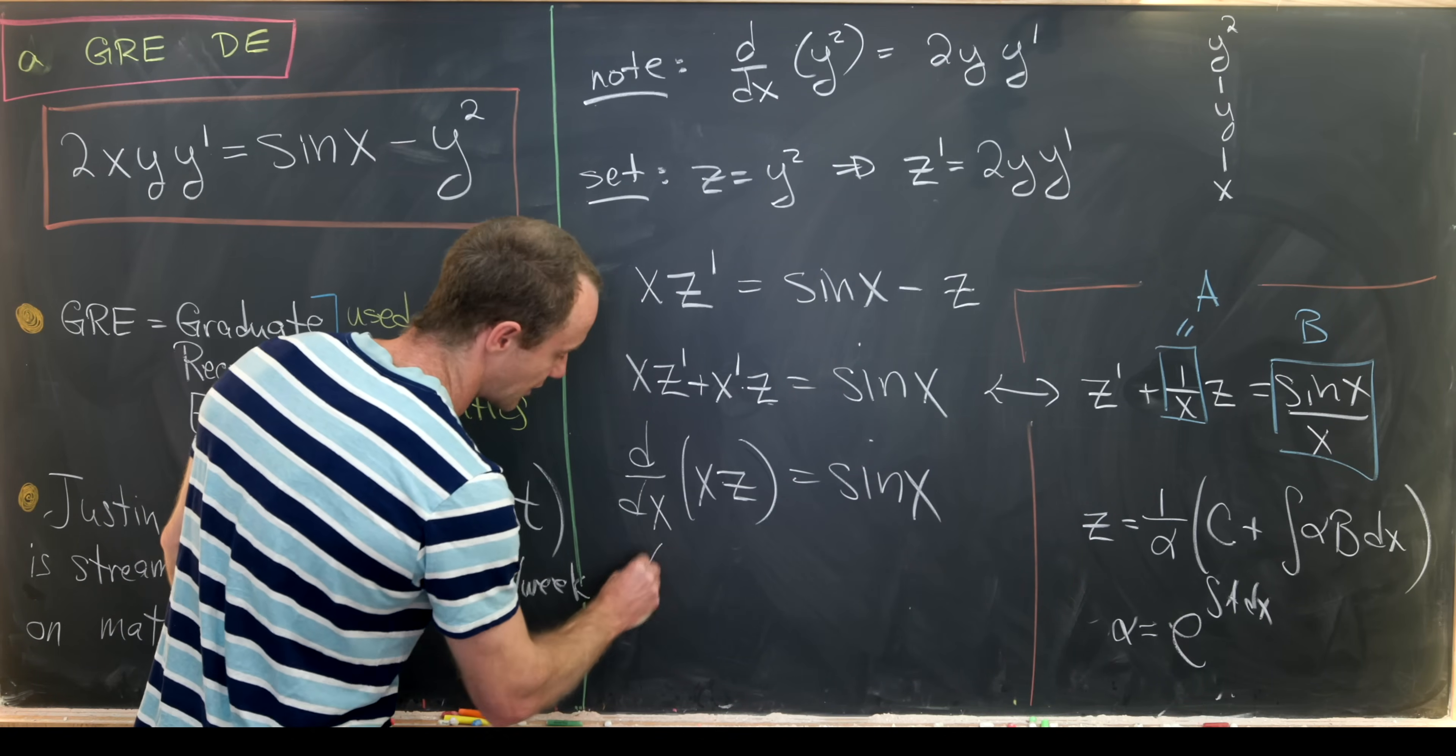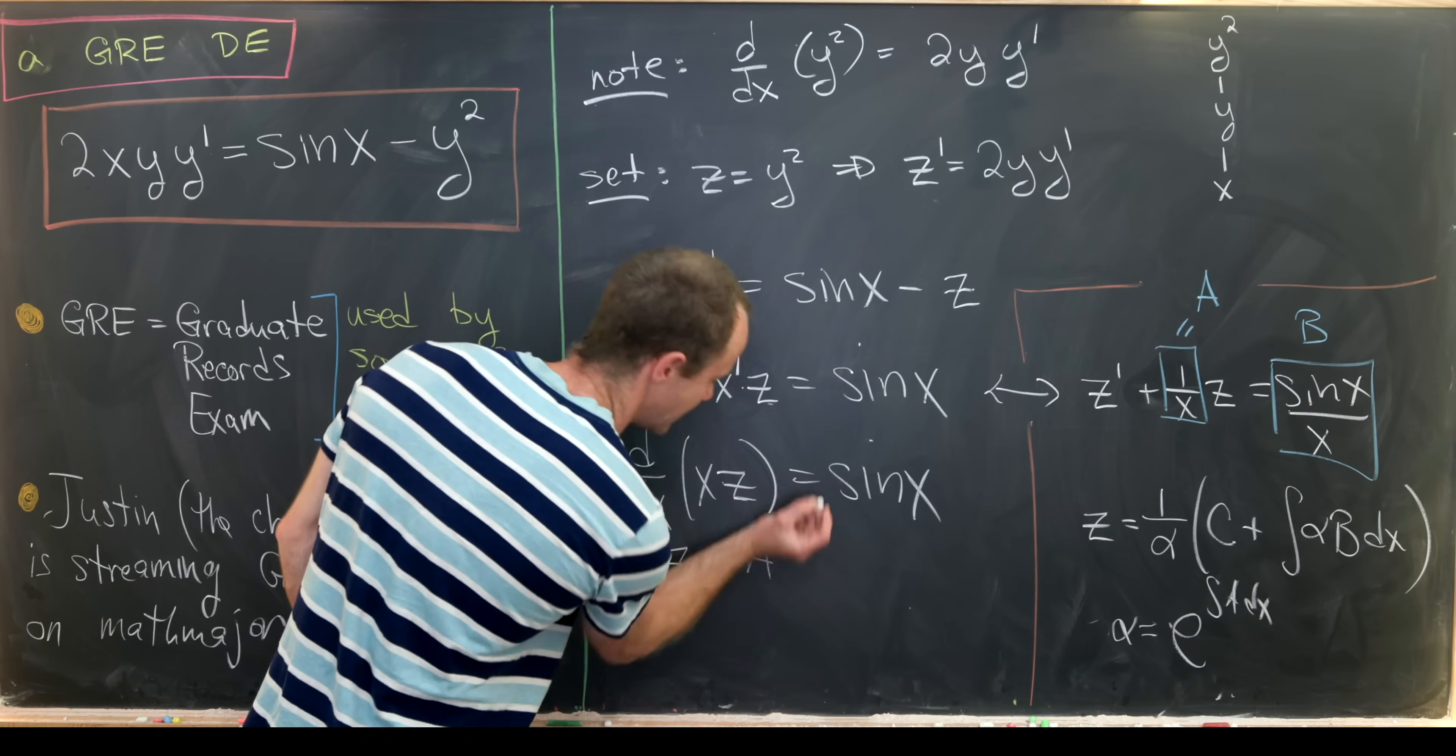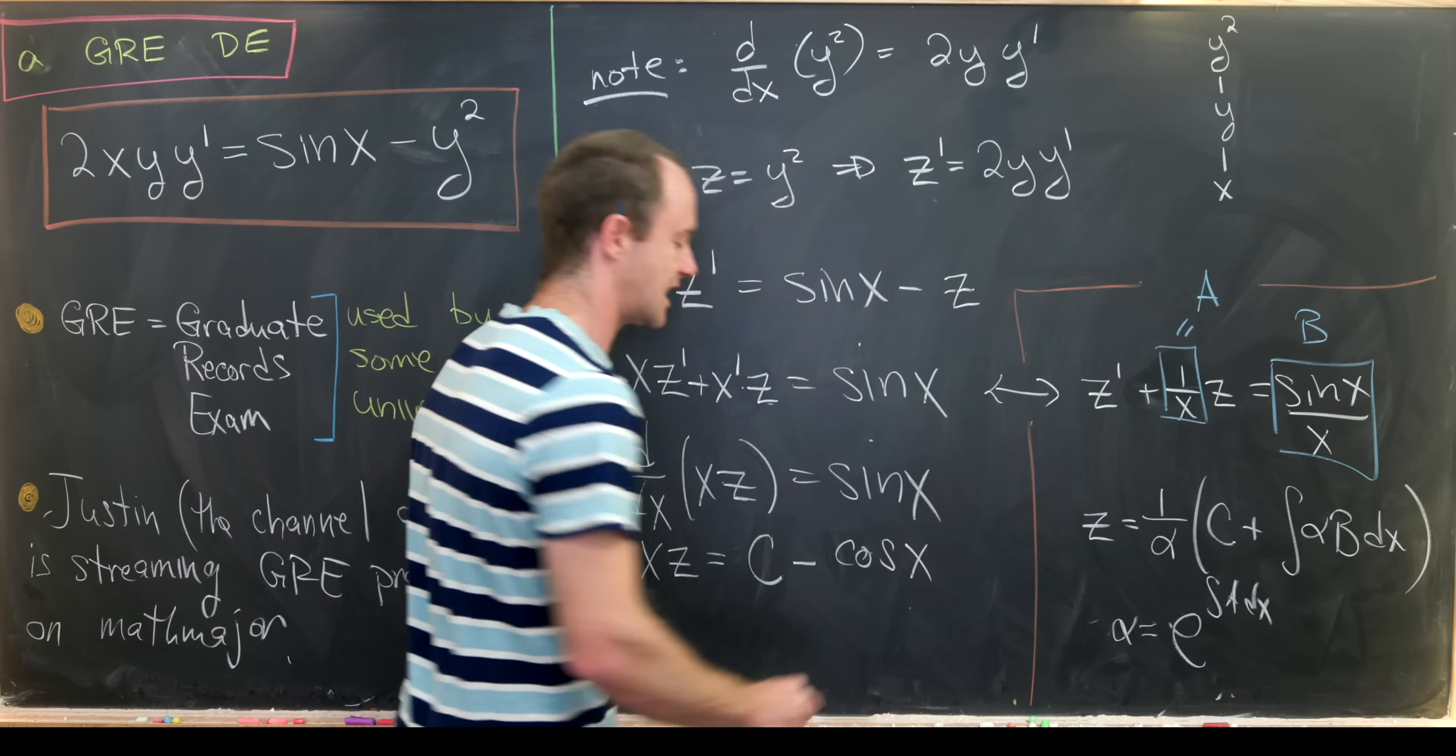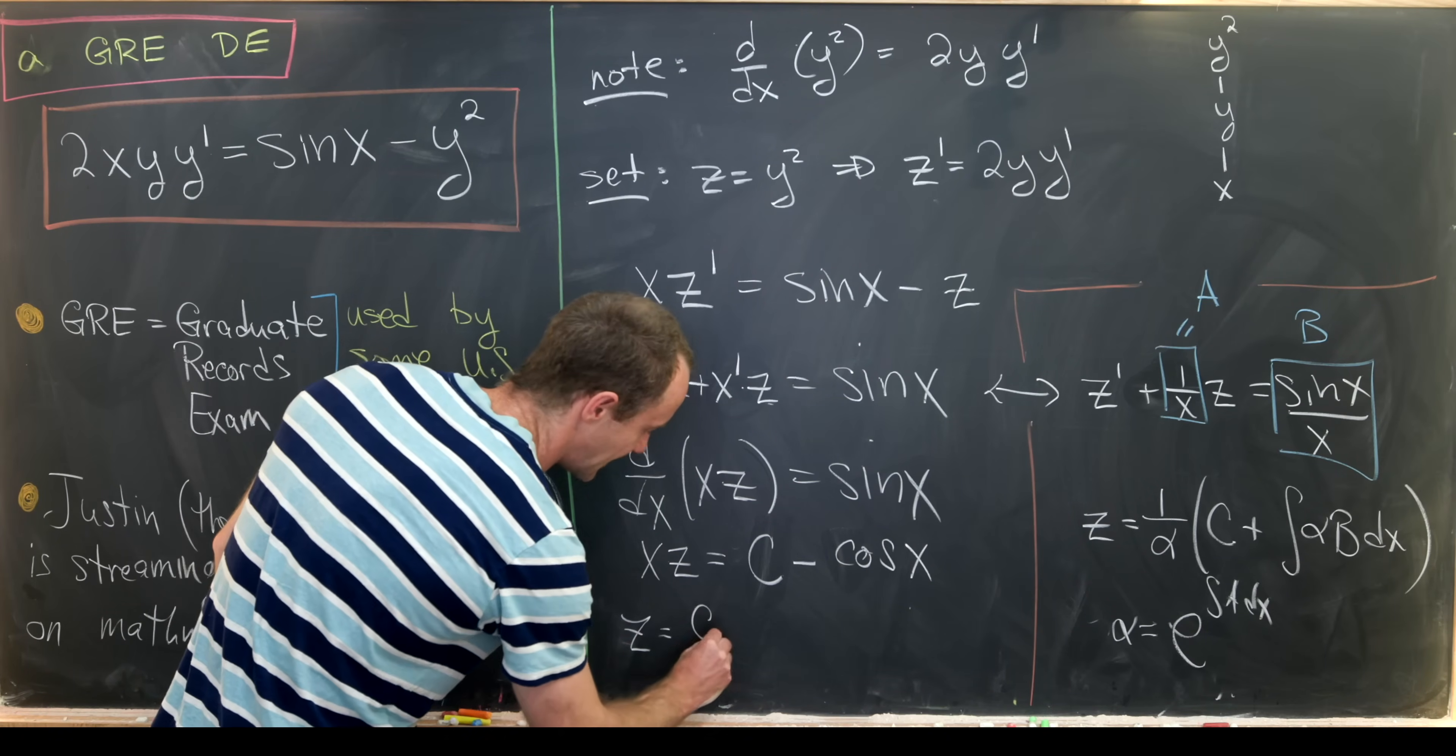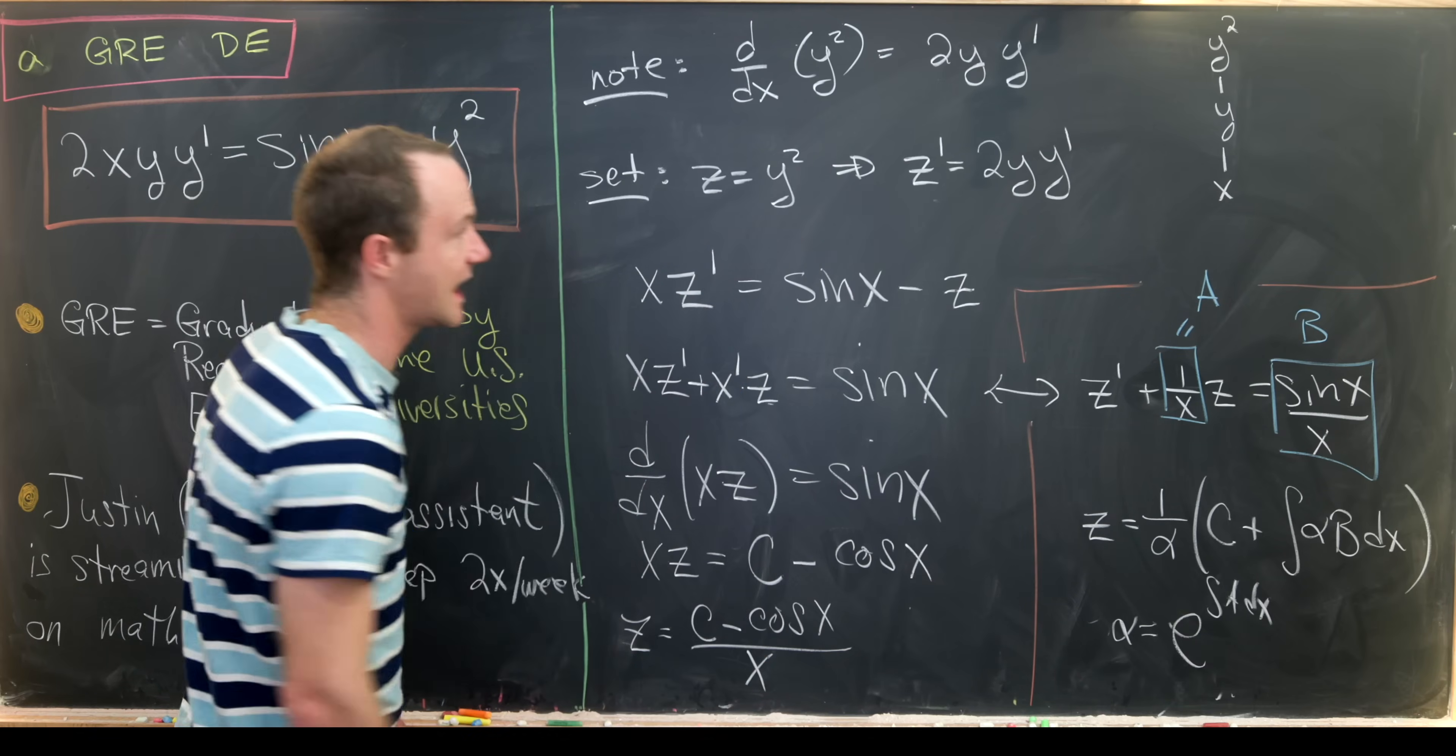So from here we have x times z is equal to a constant, I'll maybe call that constant c minus the anti-derivative of sine x which is cosine x. Then I can maybe say z is equal to that constant minus cosine of x all over x.